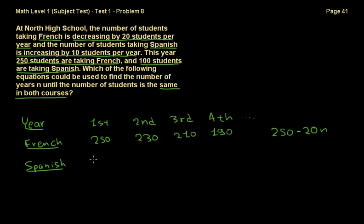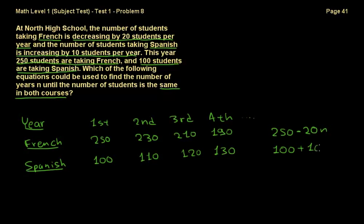The same thing happens to the number of students taking Spanish. That's 100 students initially. Then what happens? They get to 110, then 120, then 130 — they increase. So if you have 100 students initially, you add 10 multiplied by the number of years that have passed. If 3 years have passed, to get to the fourth year, you add 10 times 3, so you get 130.